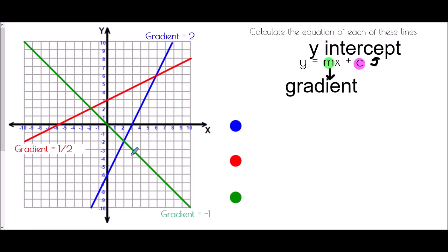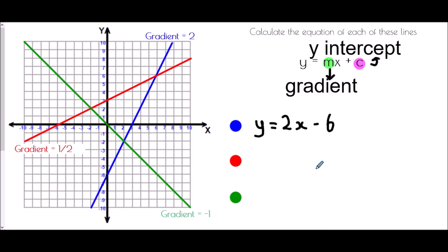For the blue line, the gradient was two, so the equation starts as y equals 2x. Looking at the y-axis, the line crosses at negative six, so the full equation is y equals 2x minus six. Find the gradient, find the intercept — that's all we need.